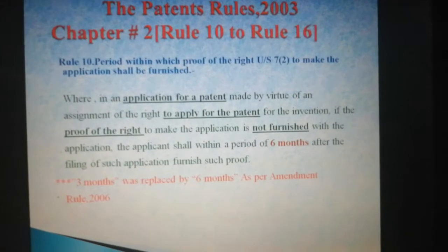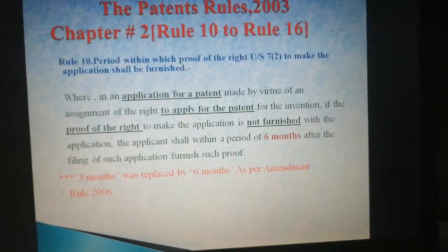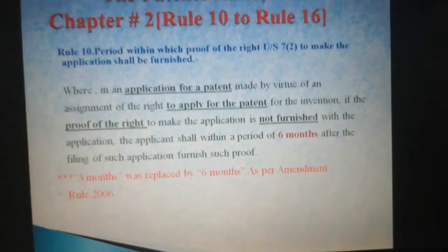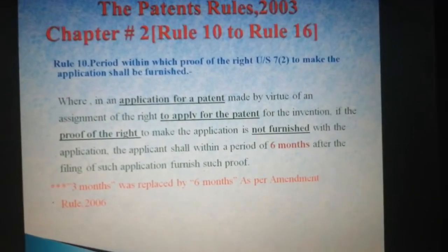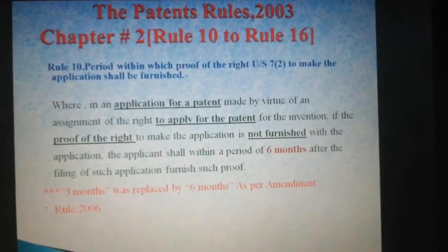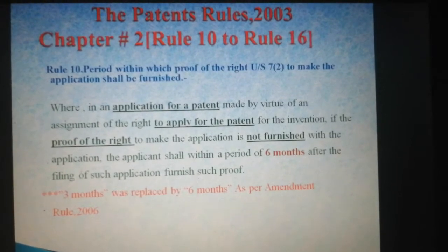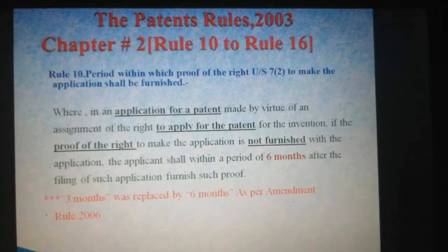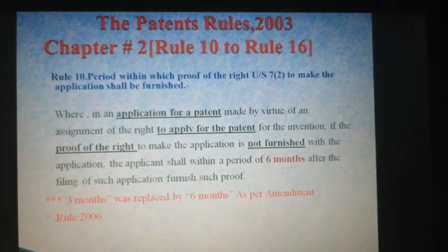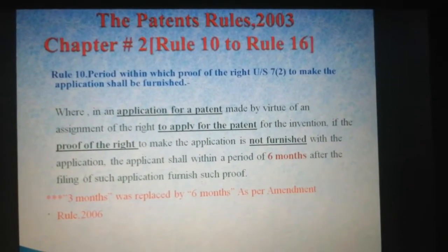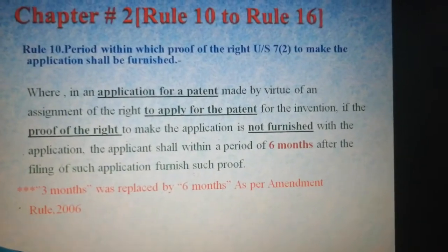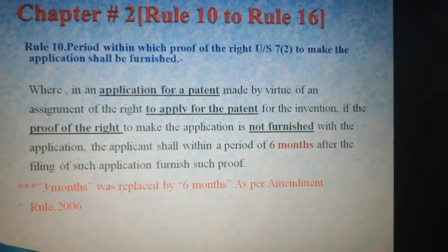We will start with Rule 10. The title of Rule 10 is: period within which proof of the right under Section 7, Subsection 2 to make the application shall be furnished.